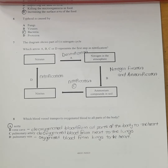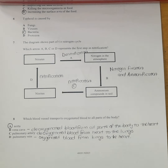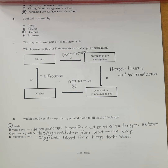The pulmonary vein transports oxygenated blood from the lungs to the heart. Make sure you are confident with the circulatory system — understand all the different types of blood vessels, compare the structures of veins and arteries, which vessels have valves, which carry blood under high pressure, which have more elastic fibers, and which have a wider lumen.